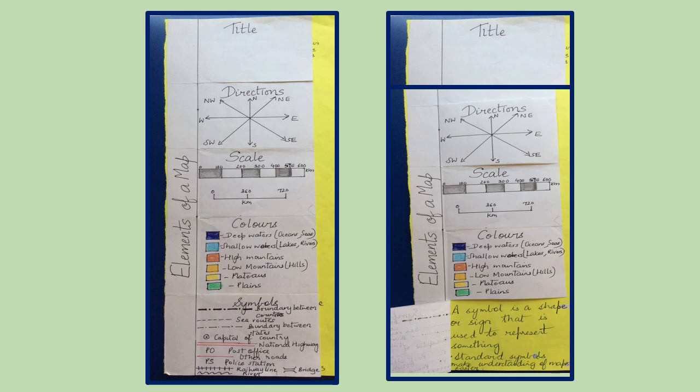For boundary between countries, we have a line-dot, line-dot, line-dot pattern. For sea routes, we have lines. Then for boundary between states, we have thin line followed by a dot in a sequence.